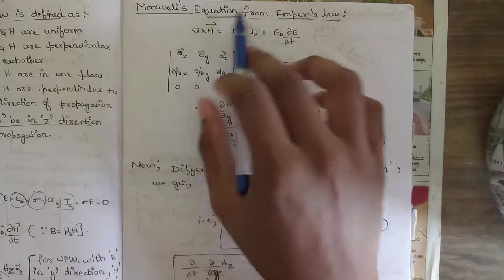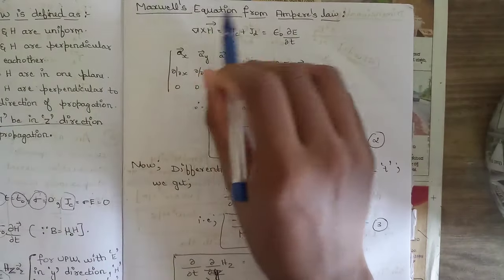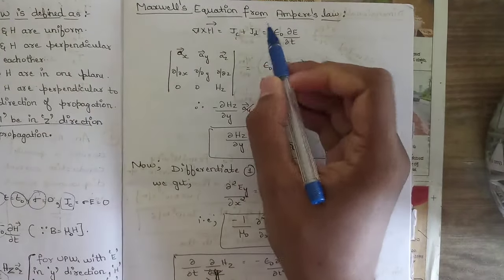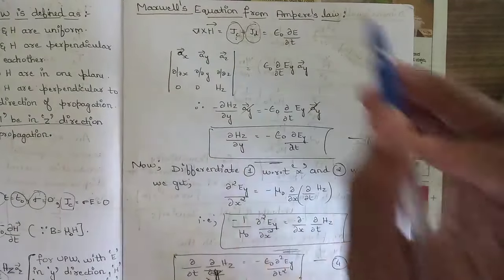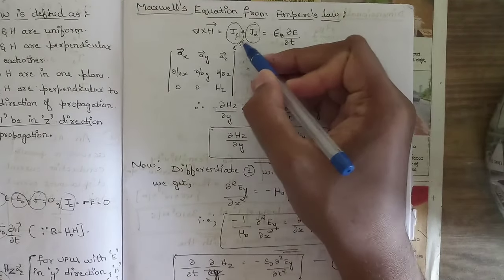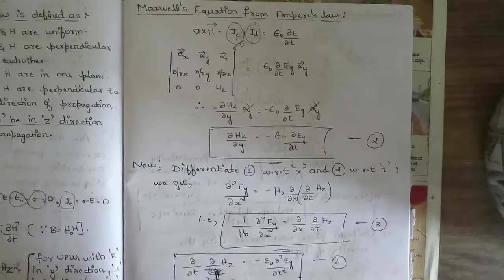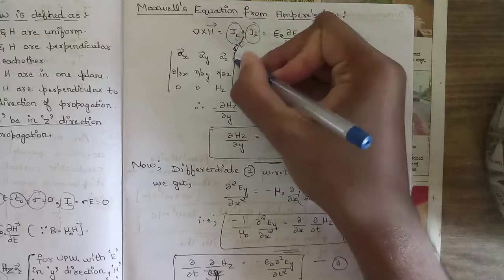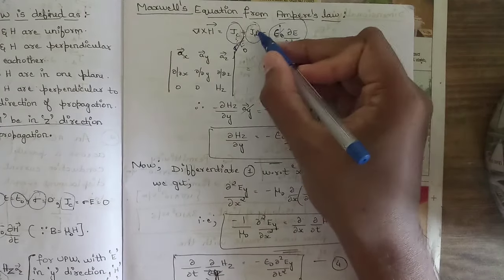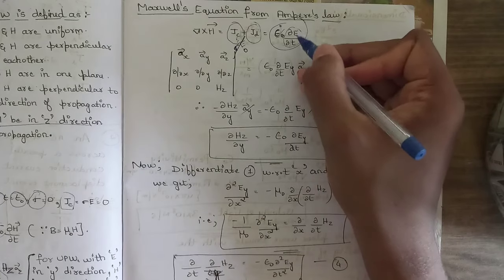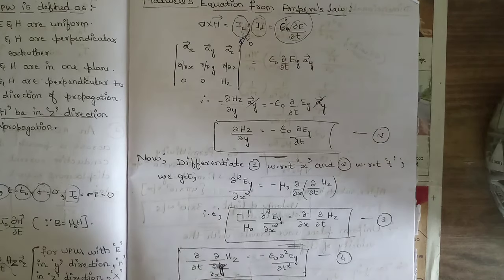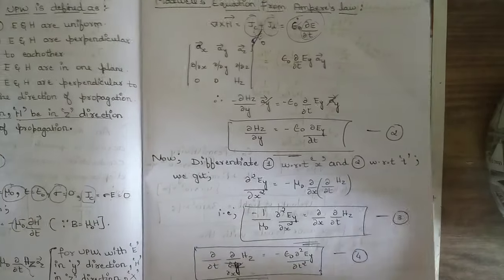The next part is Maxwell's equation from Ampere's law: del cross H equals JC plus JD, where JC is the conduction current density and JD is the displacement current density, equal to epsilon times dou E by dou t. Since JC equals sigma times E and sigma equals zero in free space, the conduction term vanishes and we are left with epsilon naught dou E by dou t.